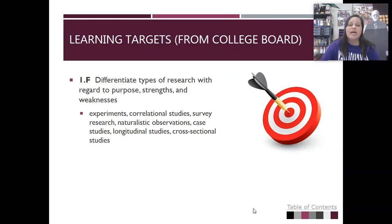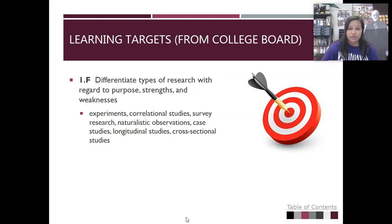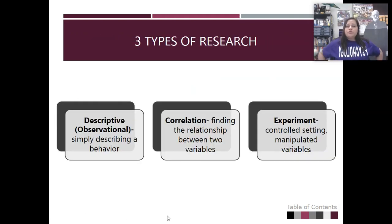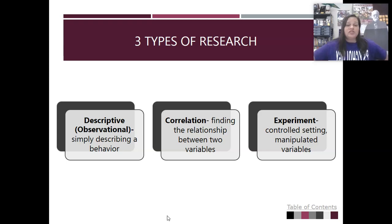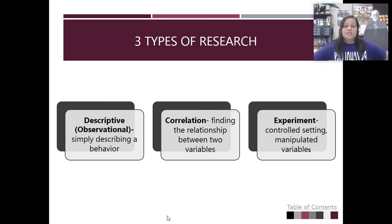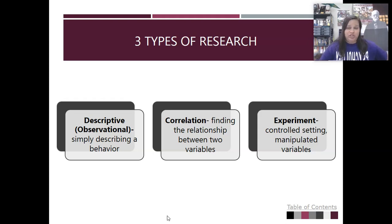We're going to look at the different types of research, their purpose, their strengths, their limitations. I'm not getting much into experiments yet today, but all the others. There are three main types of research: descriptive or observational, where we're really just observing and describing behaviors and looking for patterns; correlation, where we're finding the relationship between two specific variables; and then experimental research, where we're actually trying to control and manipulate variables to determine causation. Today, we're focusing on observational.